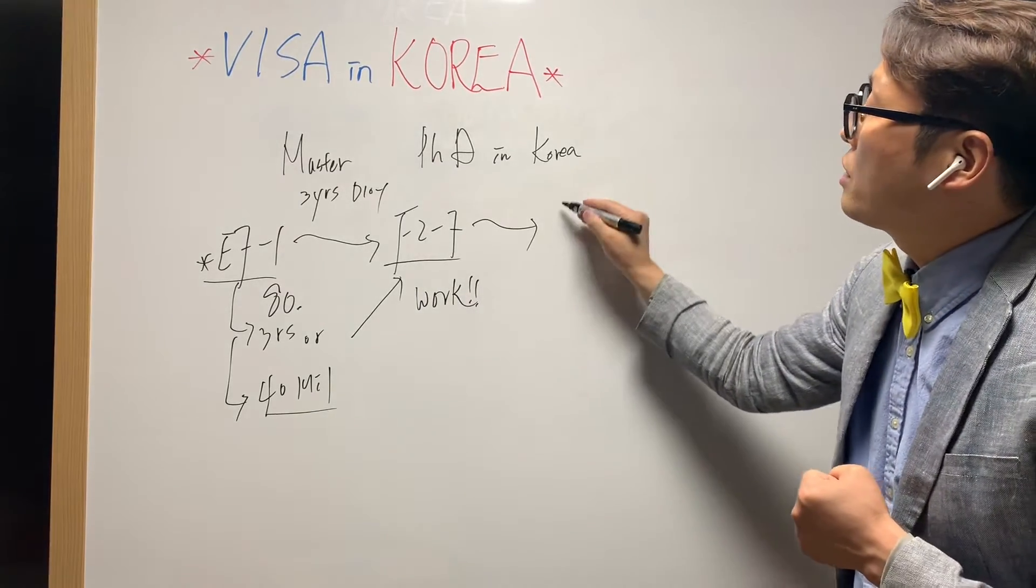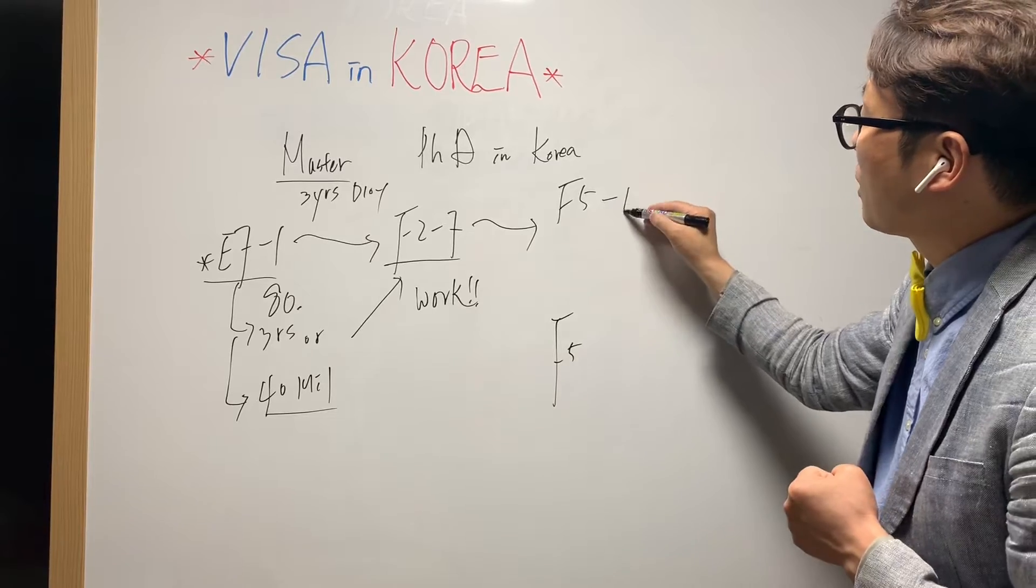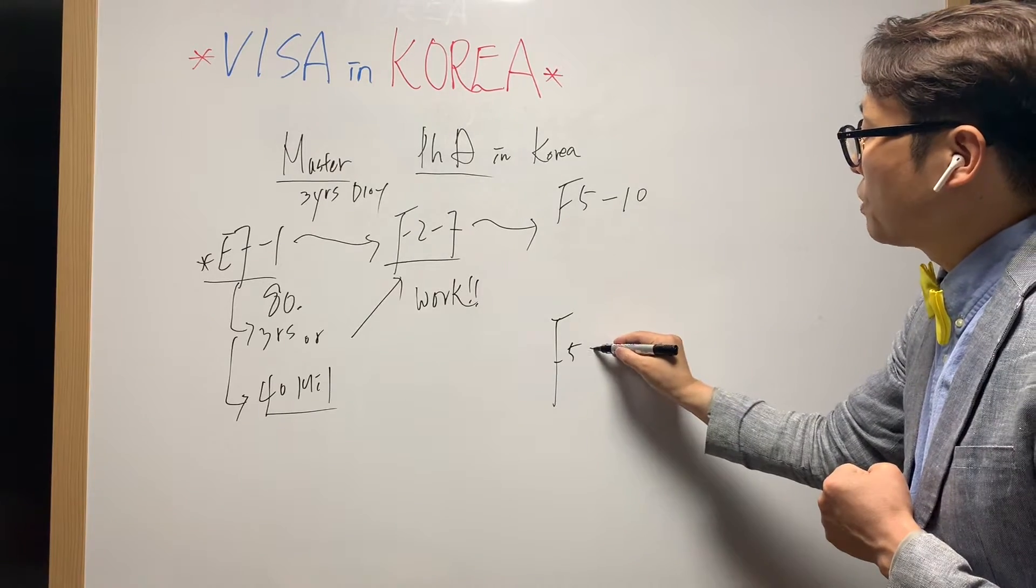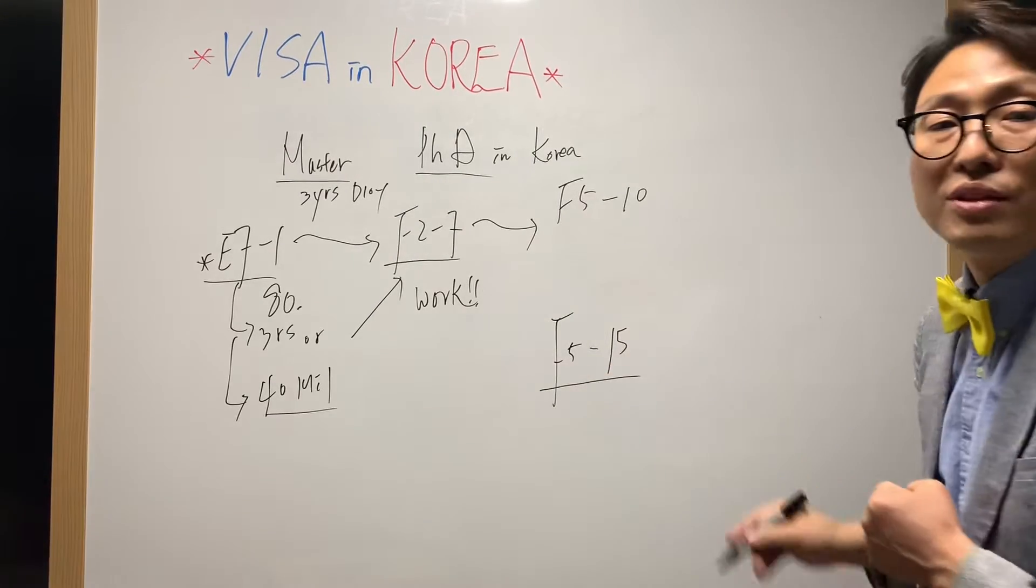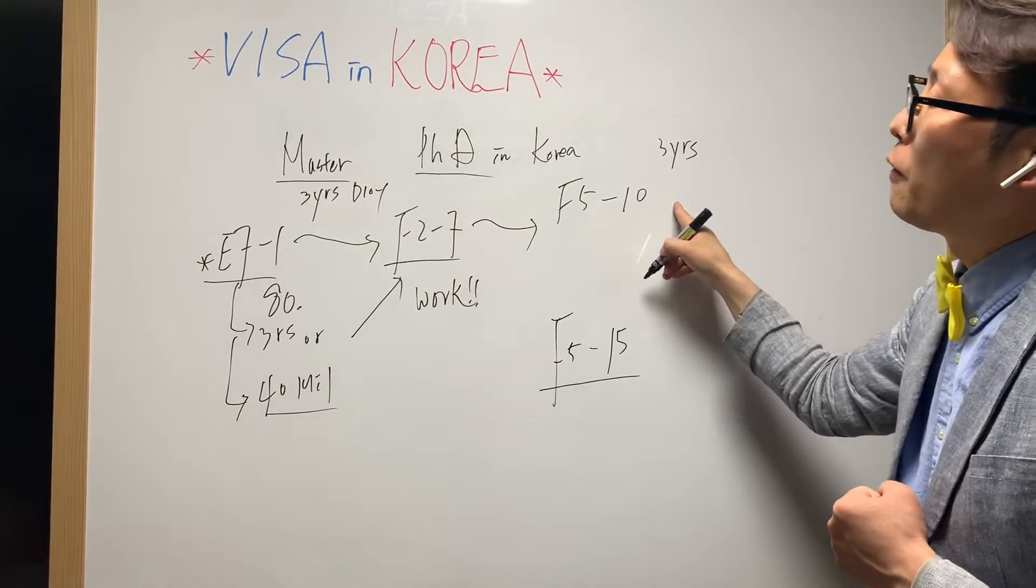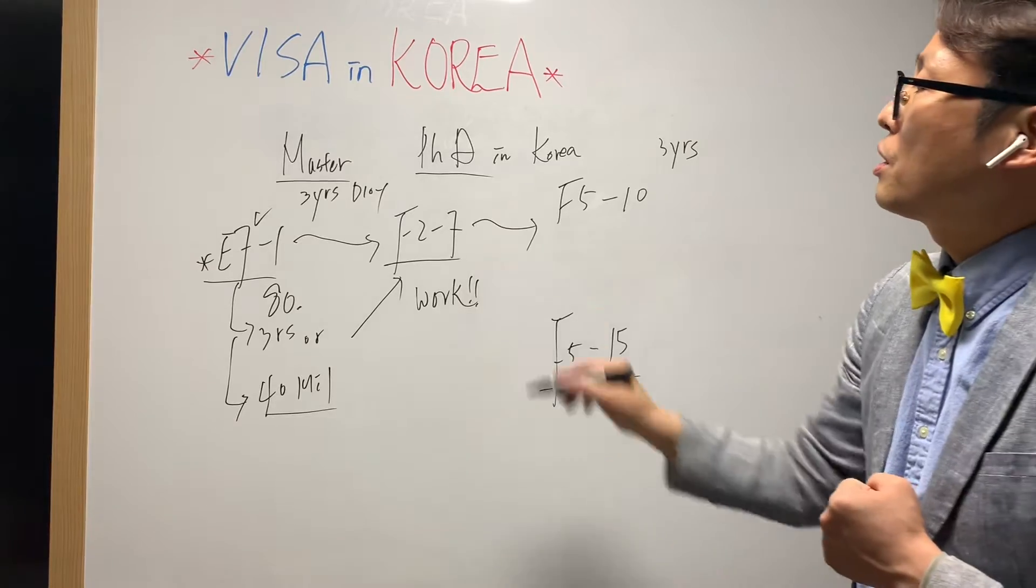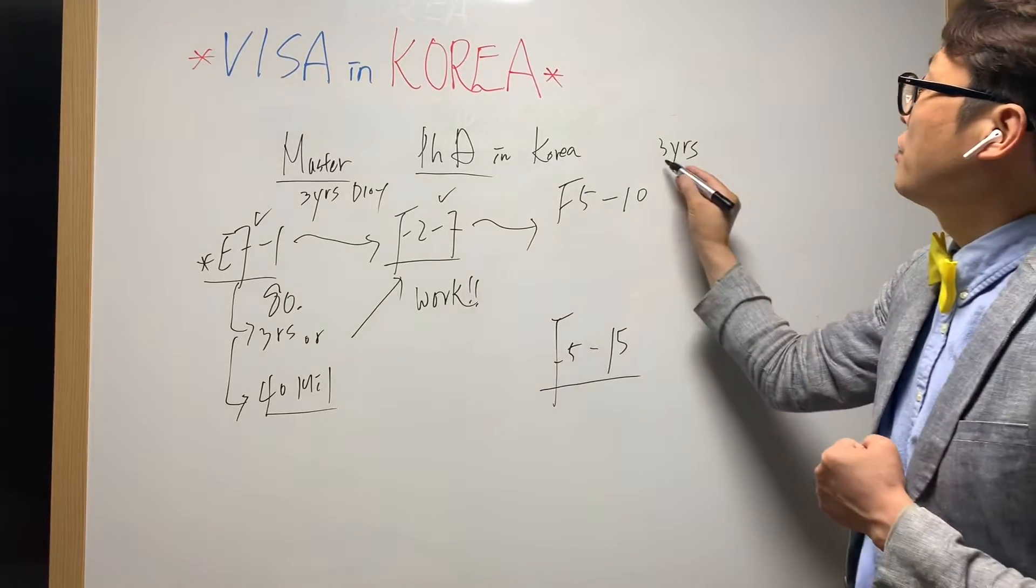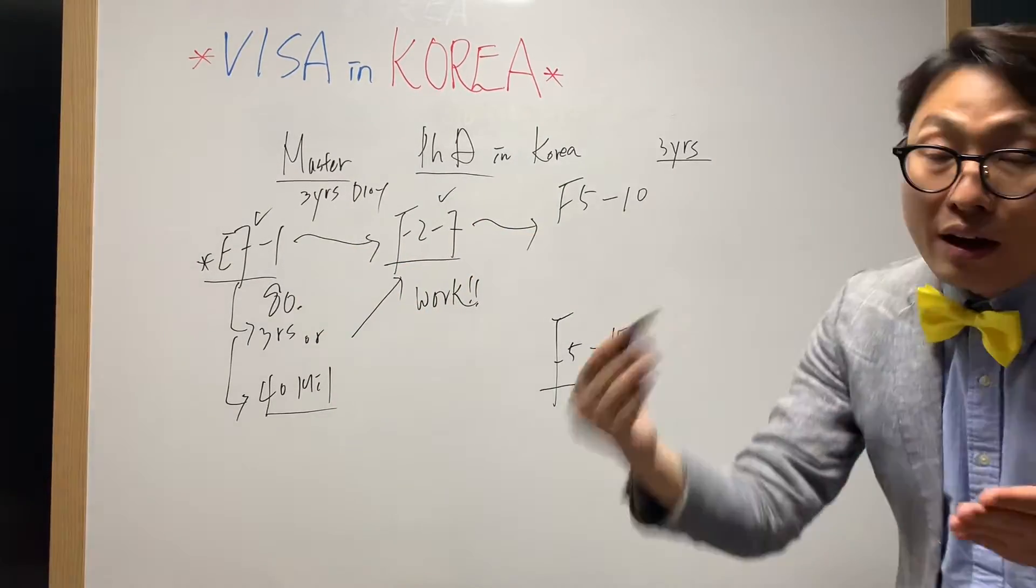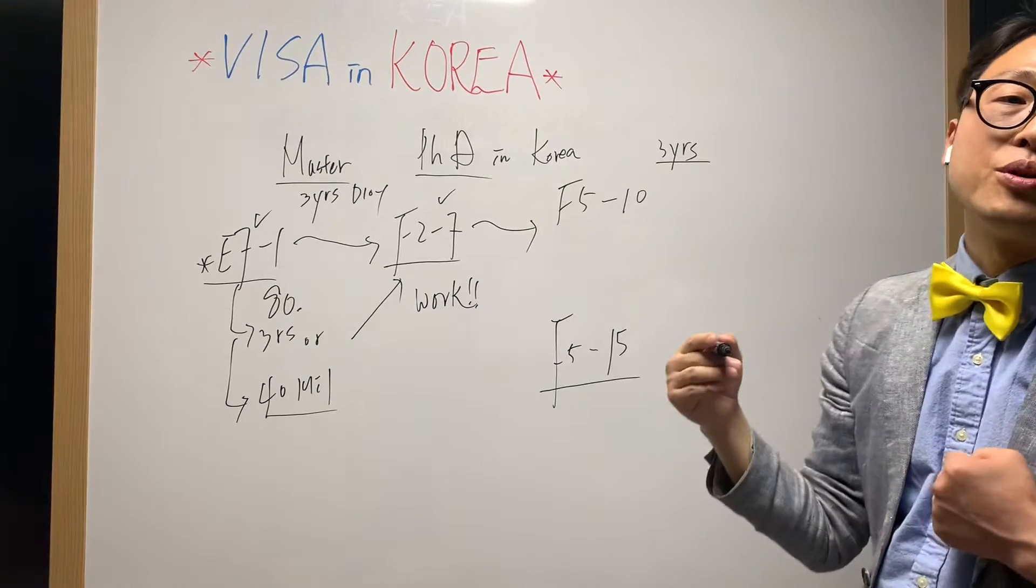If you want to change to F5 visa and you got a master's degree in Korea, I'd like to recommend you to apply for F5-15. The basic requirement is three years from your graduation, including your E7-1 visa period and D10-1. If you stayed more than three years after D2 and D10-1, you can apply after three years from your graduation.